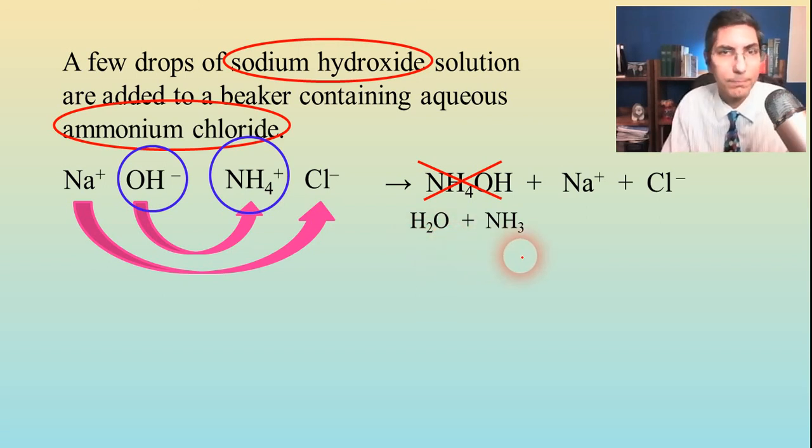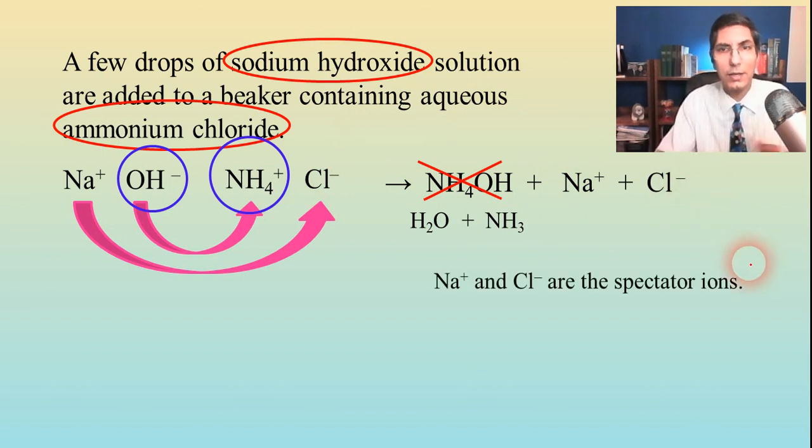So are there any spectator ions here? Well, I see a couple. It looks like the sodium ions and the chloride ions are present on both sides. So those are spectators. I can eliminate those from the net ionic equation.